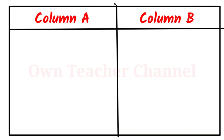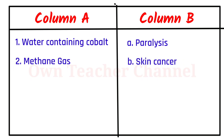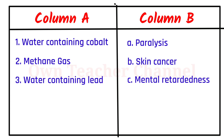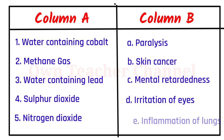Column A and Column B — water containing cobalt: paralysis; methane gas: skin cancer; water containing lead: mental retardedness; sulphur dioxide: irritation of eyes; nitrogen dioxide: inflammation of lungs.